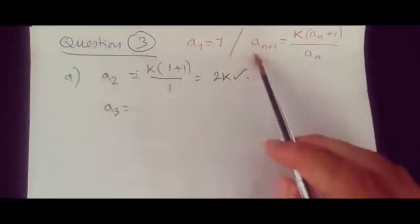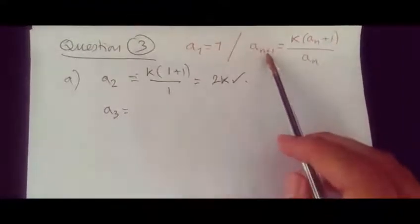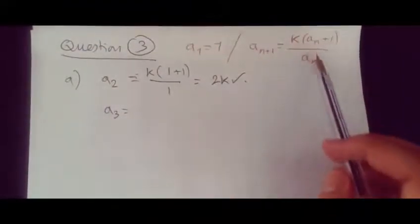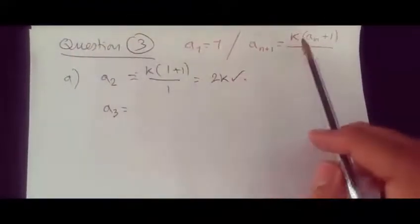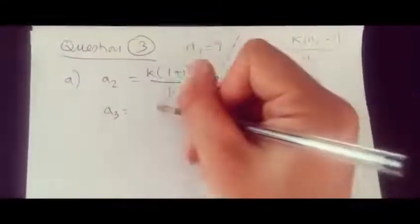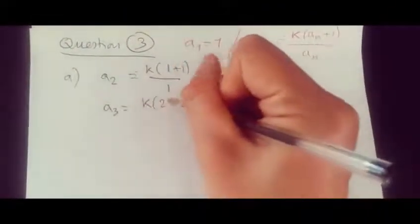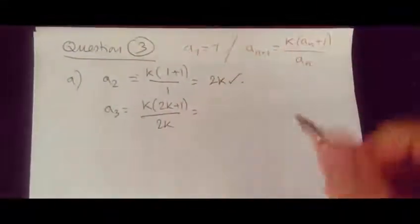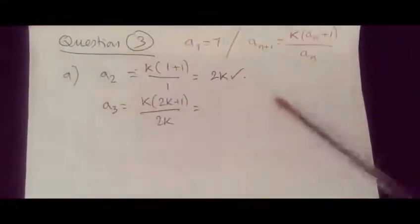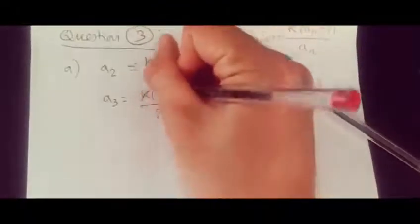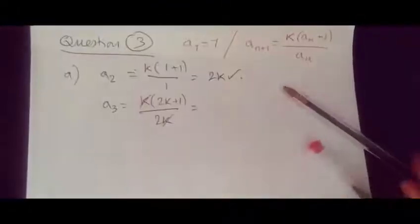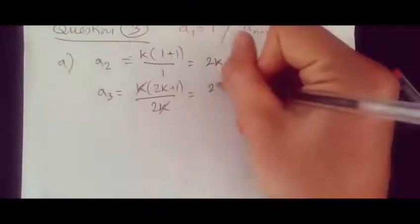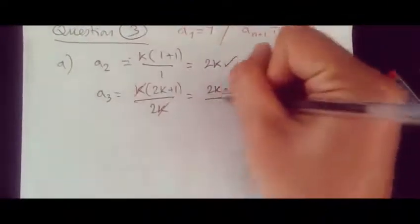a3 occurs when n is 2, so a(2+1) is 3. Replacing these two a2s, and we know a2 is 2k, so we have 2k here and 2k there. This gives us k(2k + 1) over 2k. Right here we can cross-simplify. We've got k here, knock this out and this one.